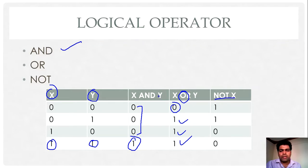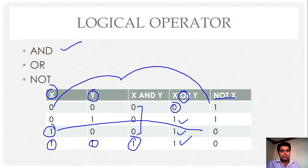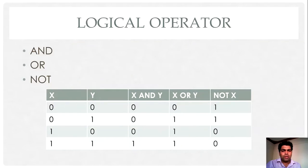And NOT of X means whatever the X value, it will toggle the value of X. That means if X is having value 0, then it will return 1. If X is having 1, then it will show 0 as an output. So this is the logical operator.